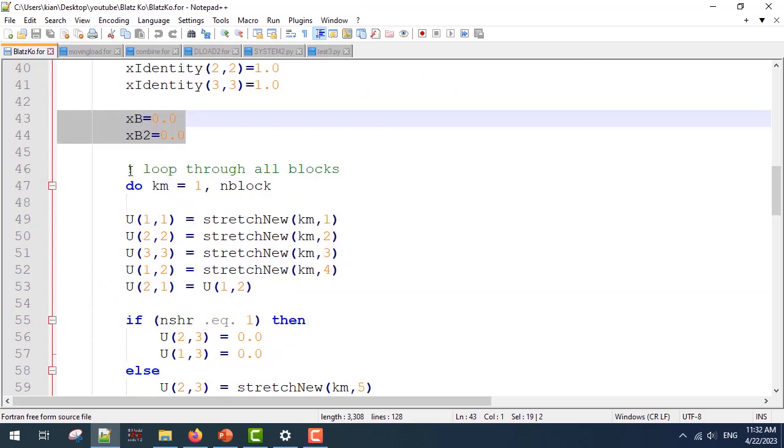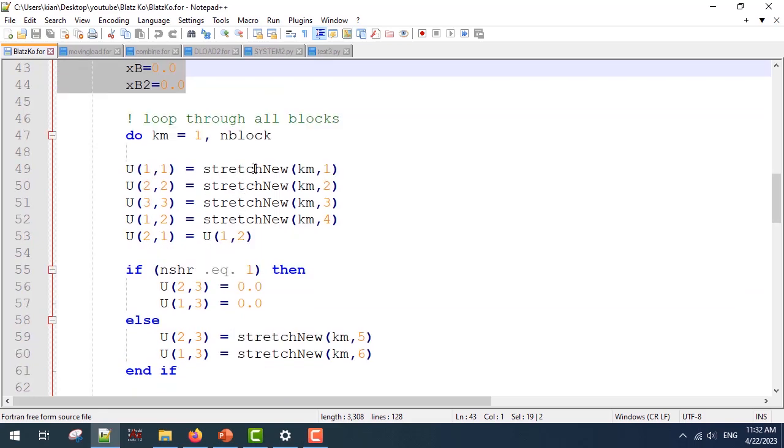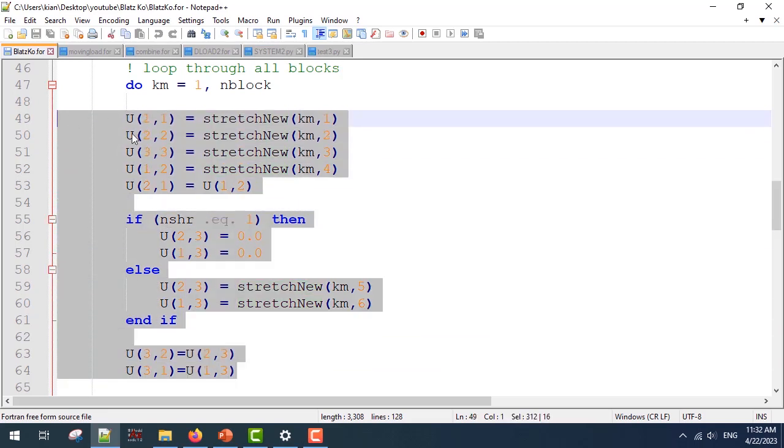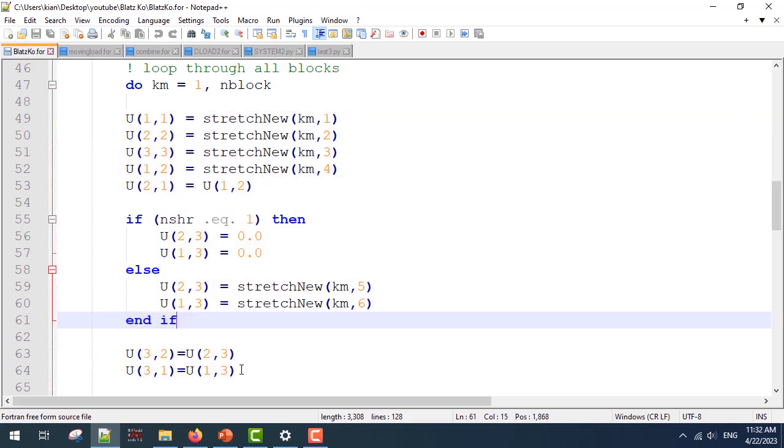Then I'm going to do loops for the M blocks. You know that ABAQUS gives the new stretch matrix in the form of stretch new. For simplicity, I'm going to reformat it according to matrix notation, and this part is for matrix notation, and the last section is because u is a symmetric matrix.